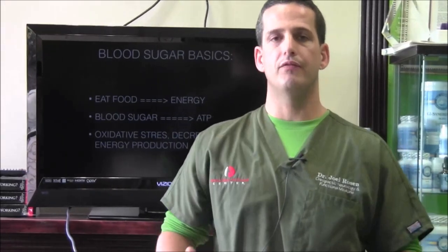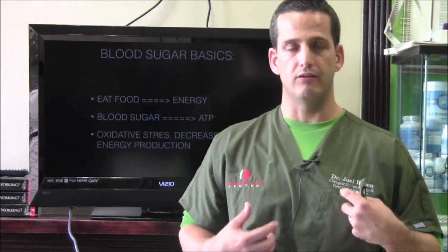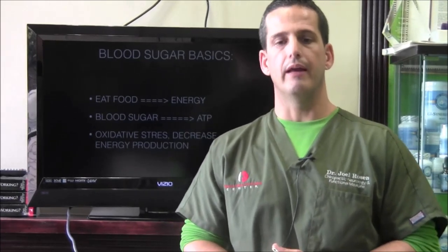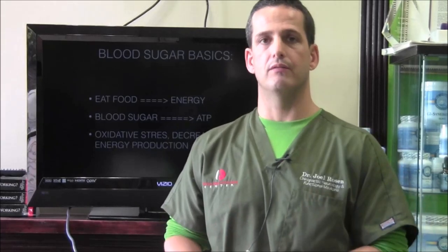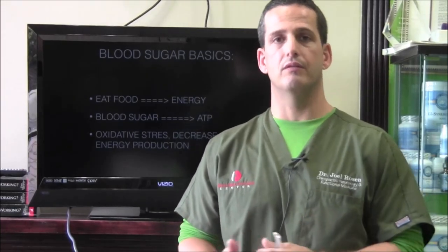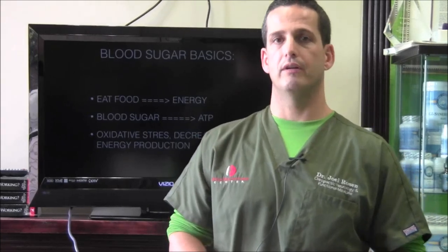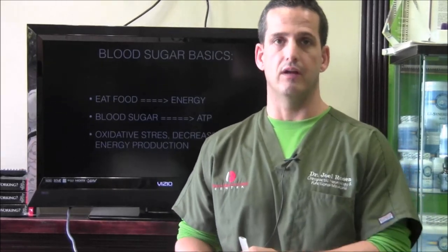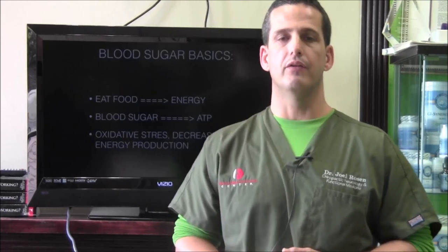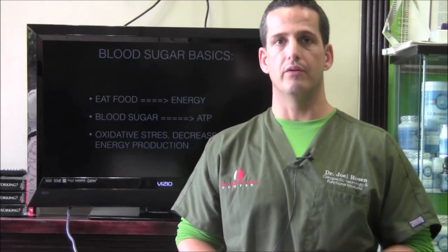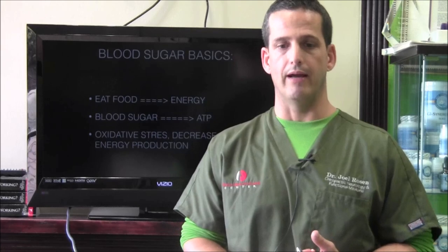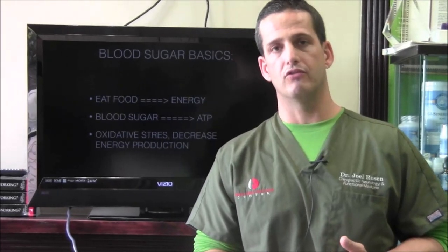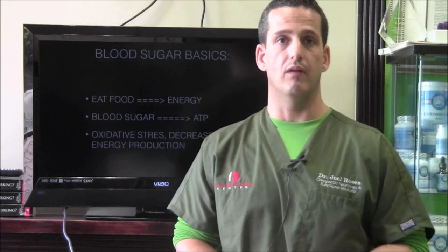So let's talk about the basics of blood sugar today. We eat food, and when we eat food it should be converted to energy efficiently. Basically, when food is converted into sugar, that sugar needs to get inside the cells to form ATP. If that doesn't happen optimally — because of different physiological breakdowns — you're going to have a lot of problems: oxidative stress, free radical damage, decreased energy production, and disruption of many of your hormones.